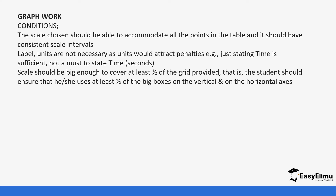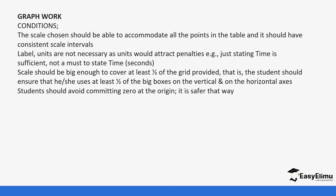The scale should be big enough to cover at least half of the grid. It shouldn't be too small and it shouldn't be too big — just enough to cover at least half of the grid you've been provided with. You'll be provided with a grid; put big boxes on the vertical and horizontal axis. Avoid omitting zero at the origin — it's safer to place zero there if possible, it makes your work easier and avoids errors.